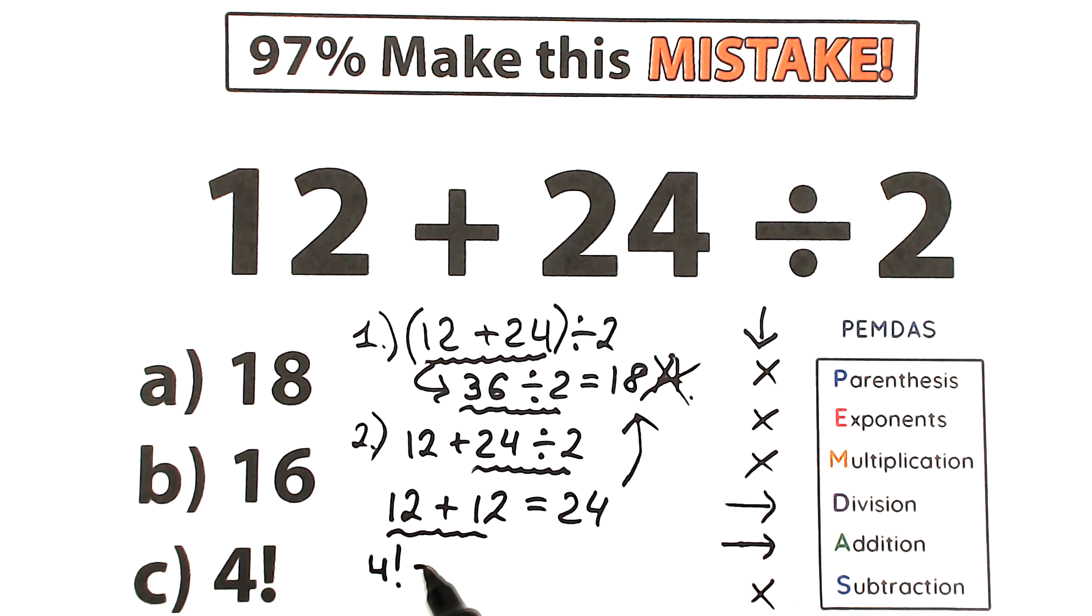4 factorial. 4 factorial, this is a product from 1, from 1 to 4. And if we multiply it, we have 6 times 4, we have 24. So 4 factorial, this is the same as 24. And 24 is a correct answer according to this PEMDAS order of operation. So a correct answer to this challenge is option C is a correct answer to this challenge.